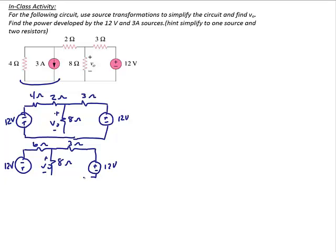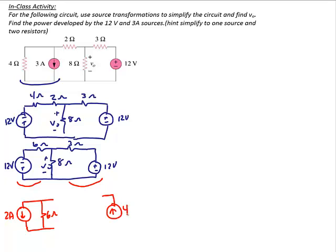In the next step, I'm going to do it in two stages. I can do a source transformation on the left and on the right. On the left side, I transform the 12-volt and 6-ohm to get 12 divided by 6, a 2-amp current source in parallel with a 6-ohm resistor. On the right side, 12 divided by 3 gives me a 4-amp current source in parallel with a 3-ohm resistor.